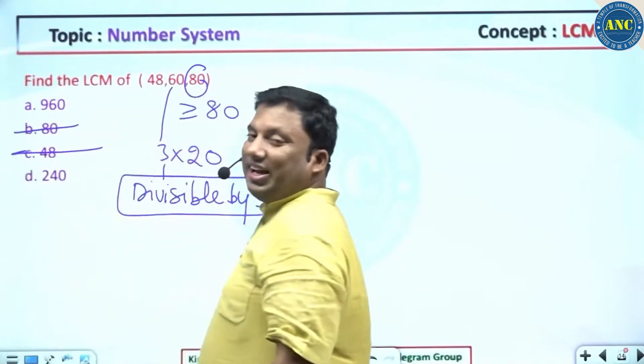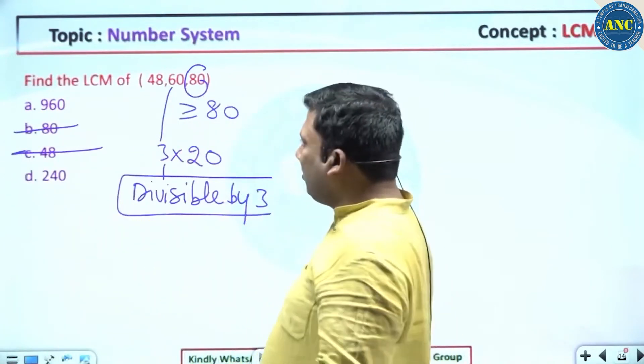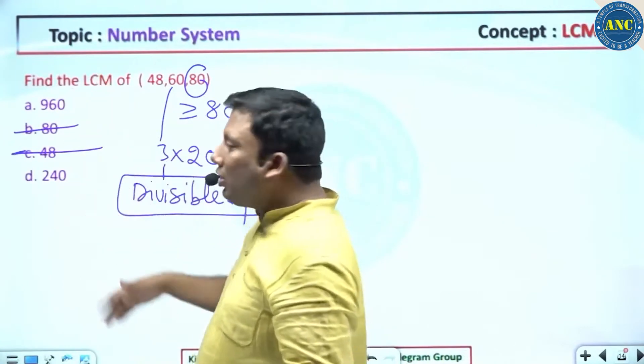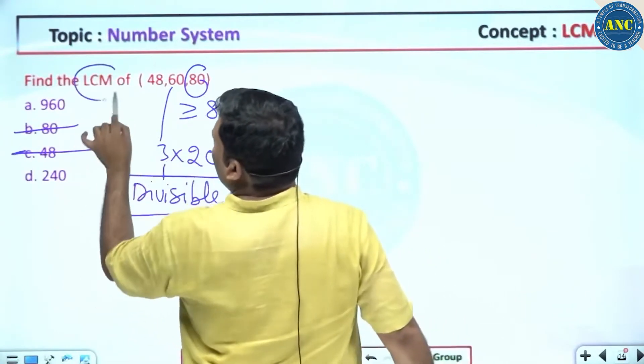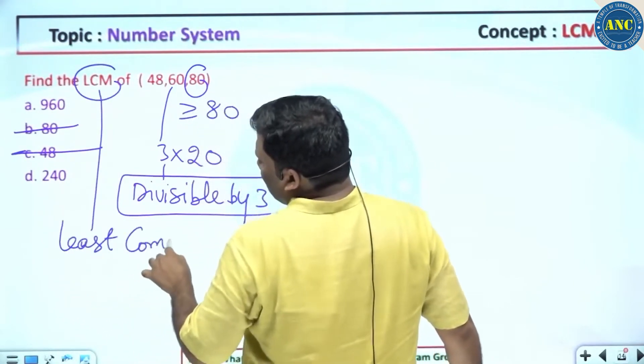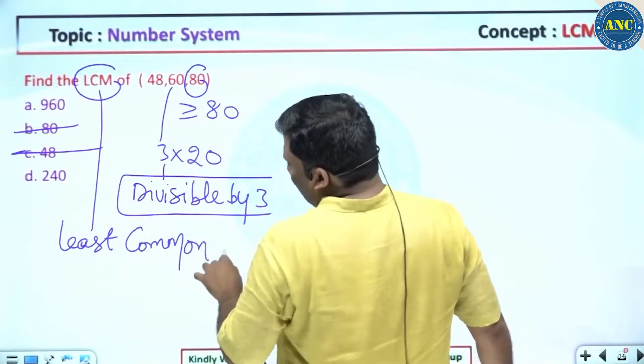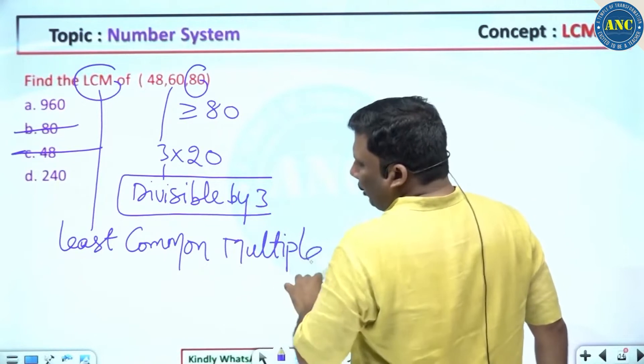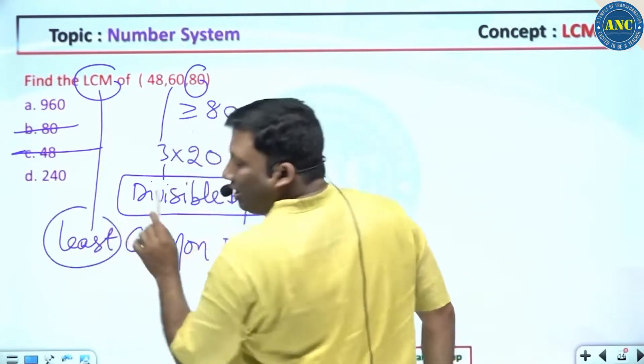80—8 plus 0 is 8, not divisible by 3. We are stuck between 960 and 240. Definition of LCM is least common multiple—least is smallest. Take the smallest among the two numbers.